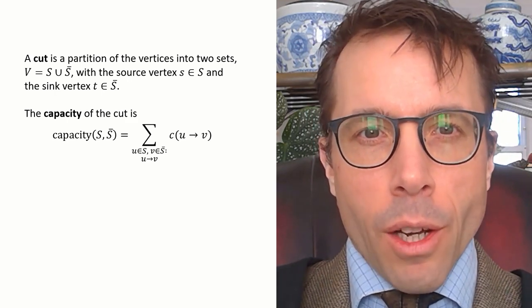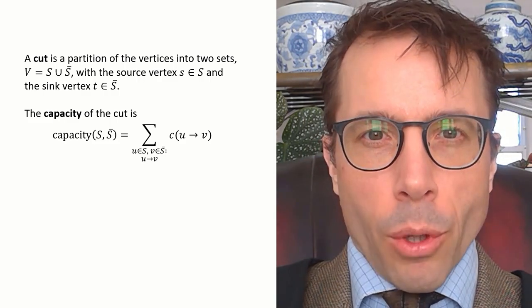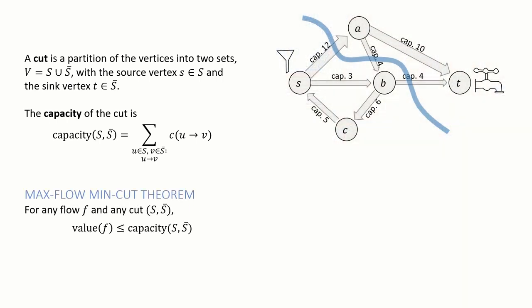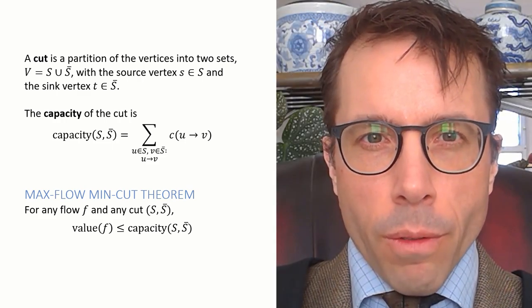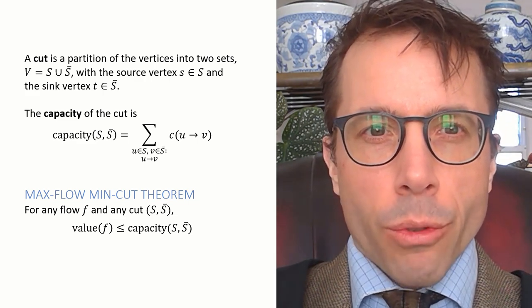Okay, now for the theorem that formalizes what the RAND Corporation was doing with their bottleneck cut. This is known as the max flow min cut theorem. Pause the video, read it to yourself. Before we go on to talk about the proof, I just want to say a bit about how we use theorems of this general type.